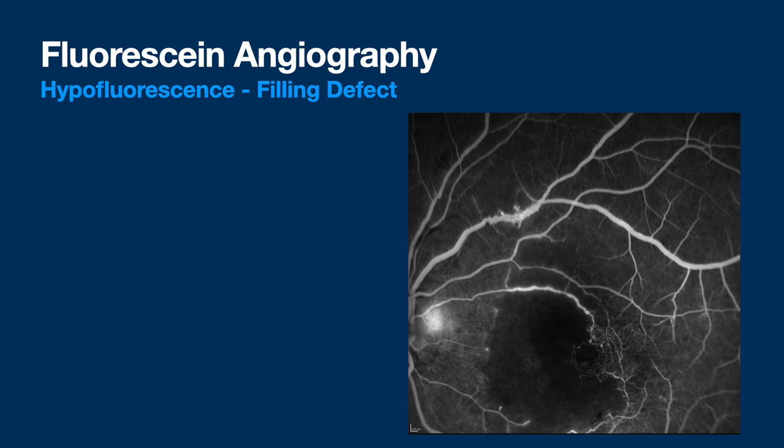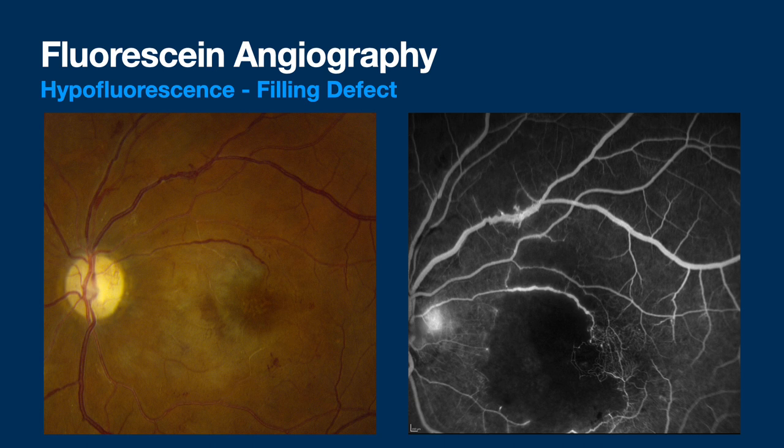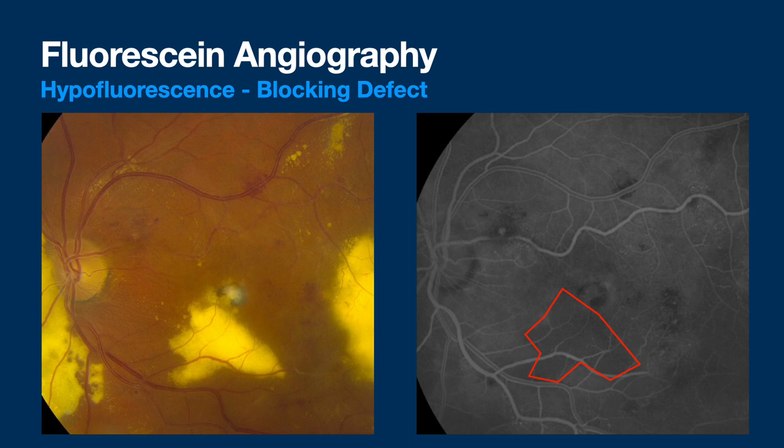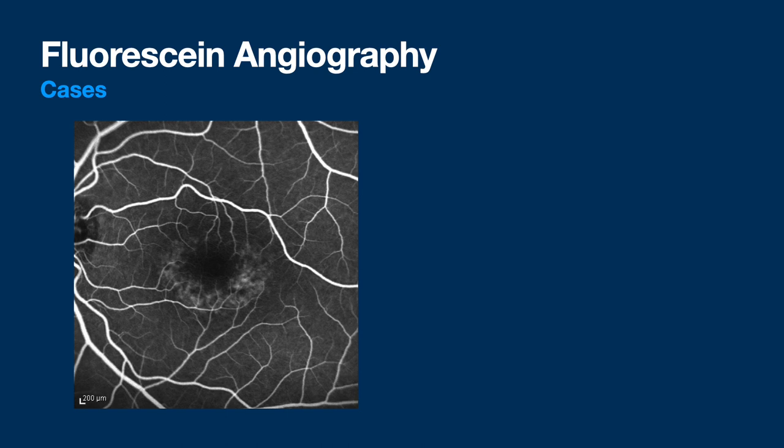Here's a filling defect — you can see a parafoveal ring of capillaries but then a large area where there are simply no blood vessels, representing non-perfusion. And here's a blocking defect — it's a patient with Coats disease and a lot of hard exudates blocking choroidal fluorescence.